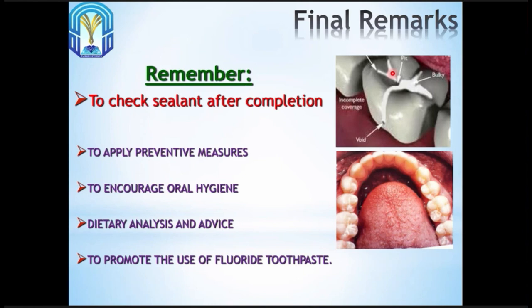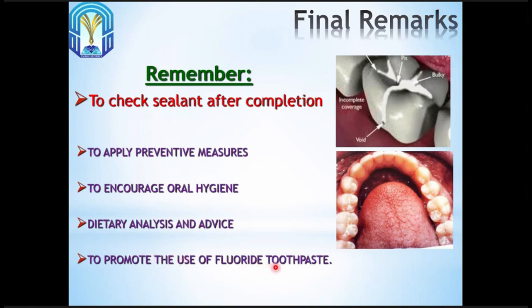Pit and fissure sealant is a preventive measure — it reduces but does not eliminate caries risk. Patients who receive sealants are susceptible to caries and must maintain good oral hygiene, follow dietary analysis, avoid sugary drinks and sweets, and use fluoride toothpaste to fight dental caries. This is a clinical application showing sealants applied on all premolars and molars.